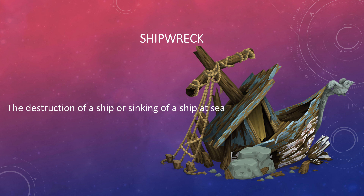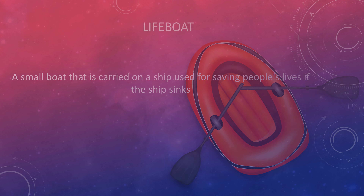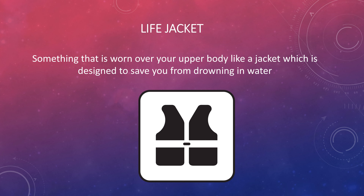The next word which I got was lifeboat. A lifeboat is a small boat that is carried on a ship, used for saving people's lives if the ship sinks. If you got lifeboat as well, give yourself another point. The next word is life jacket — something that is worn over your upper body, designed to save you from drowning in water. Do you notice how the word life jacket has a space between the two words? So, does that make life jacket an open compound word or a closed compound word? You let me know. If you got the word life jacket, give yourself a point.